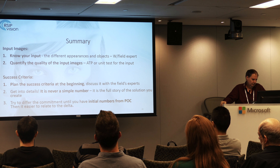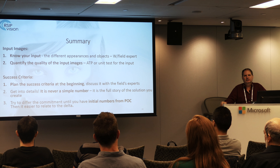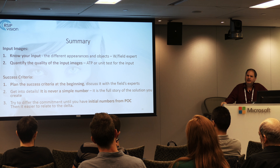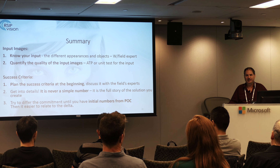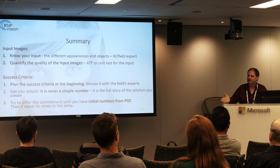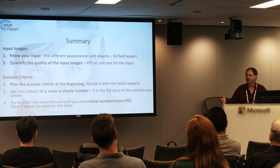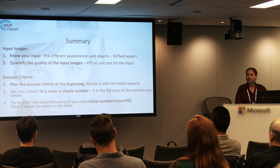About success criteria: we must plan them at the beginning so all engineers are aware, and understand that it is not just one number — there are different cases to relate to. If we can defer the commitment to a specific number until we have a proof of concept or initial software, that is much better. Then we can relate to the delta — for example, if after one or two months we get initial results at 90%, we can say the remaining problems are X, Y, Z, solving them will take this effort, and it will lead us to 95%. That is a much better way to work.